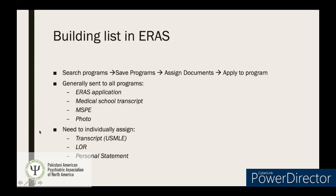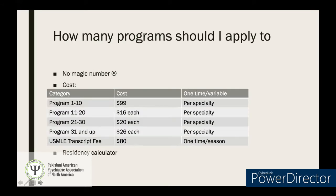A very common question is: how many programs should I apply to? There's no magic number that guarantees a match. ERAS made a tool called Apply Smart to determine the point of diminishing returns — the point after which applying to more programs doesn't significantly increase your likelihood of matching. For psychiatry, that point is around 38.8, though this applies more to US graduates; for IMGs it's harder to estimate due to smaller and more diverse applicant pools.